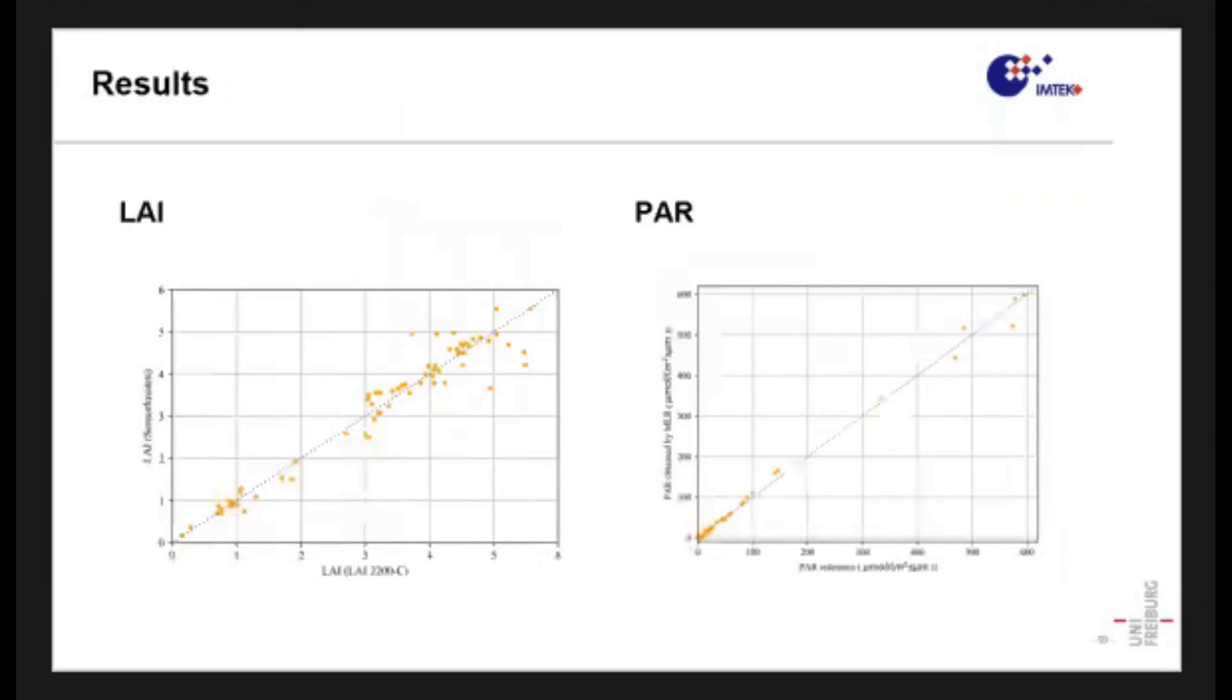These are the first results with which we have validated our system. You can see on the x-axis the LAI and the PAR measured with the state-of-the-art instrument, and on the y-axis the LAI and the PAR obtained from our sensor, which are corresponding. What we however observed is that in the case of the LAI, we have a normalized root-mean-square error which is 0.1.